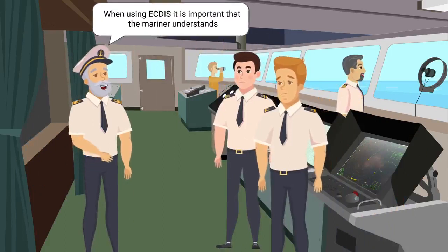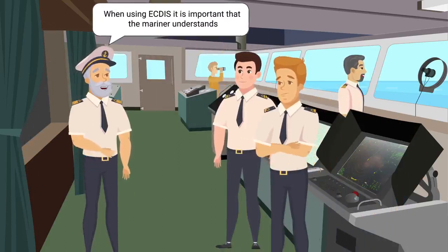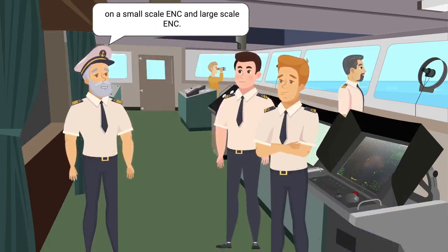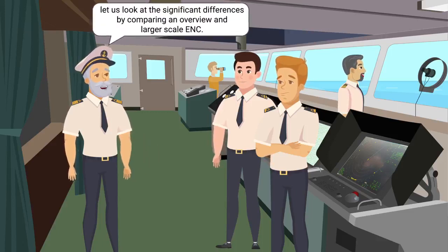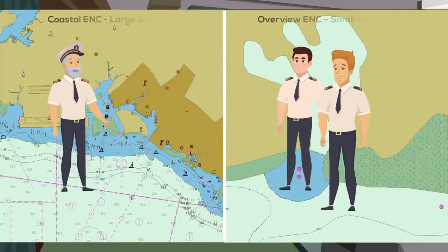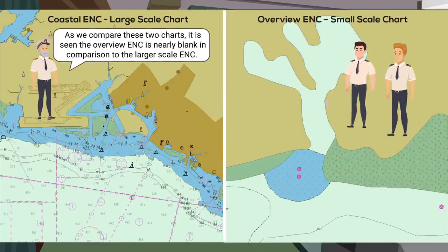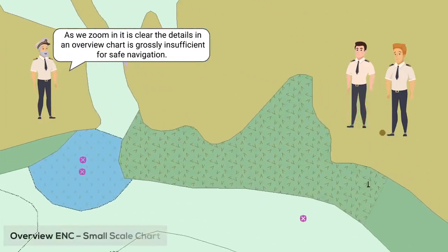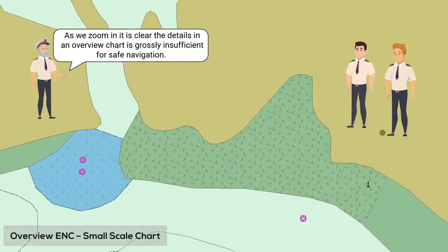When using EGDAS, it is important that the mariner understands the basic differences of the information displayed on a small-scale ENC and large-scale ENC. Let us look at the significant differences by comparing an overview and larger-scale ENC. As we compare these two charts, it is seen the overview ENC is nearly blank in comparison to the larger-scale ENC.